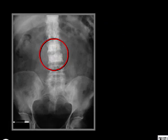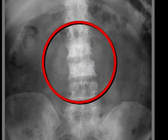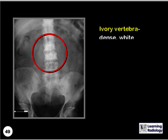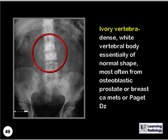What is the name of this sign? This is an ivory vertebra, dense white vertebral body or bodies, essentially of normal shape, most often from osteoblastic prostate or breast carcinoma metastases or Paget's disease.